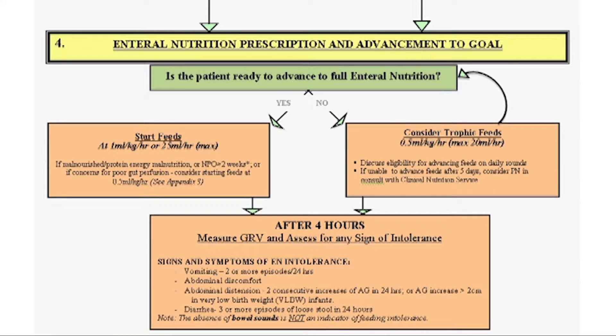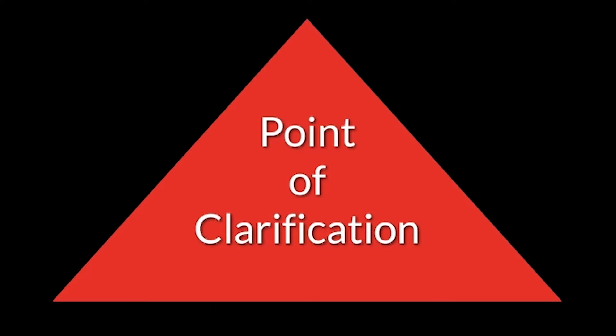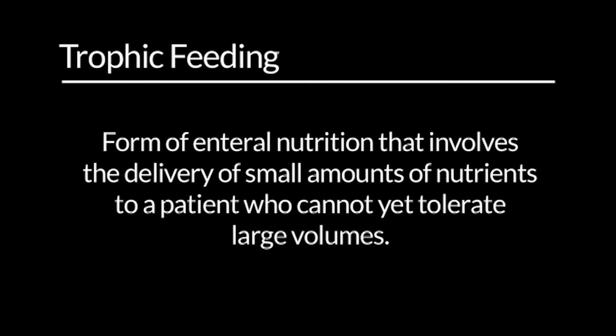We start feeds early — usually within 24 hours of admission where feasible — and advance them gradually using a uniform guideline that describes the rate of advancement and strategies for monitoring patients for evidence of intolerance. It provides suggestions for managing hurdles at the bedside, and for patients not ready to advance in this fashion, we frequently use trophic feeding, which involves delivery of small amounts of nutrients to a patient who cannot yet tolerate large volumes. Maintaining optimal nutrition throughout the PICU stay is often challenging due to procedures and perceived intolerance.